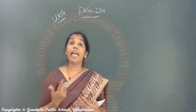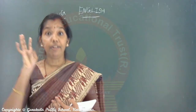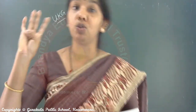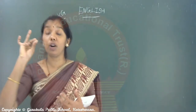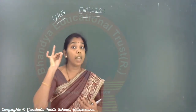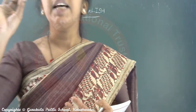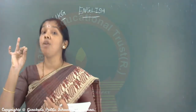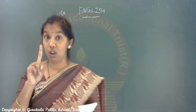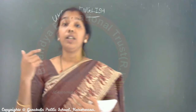Which is the 8th month of the year? January, February, March, April, May, June, July — August. In August there is one national festival, Independence Day. 15th August is Independence Day. August is the 8th month.